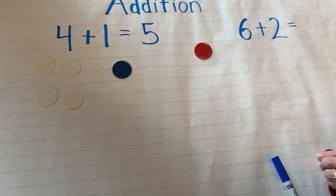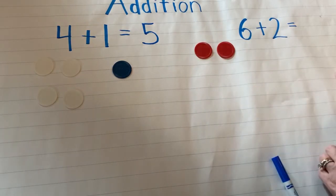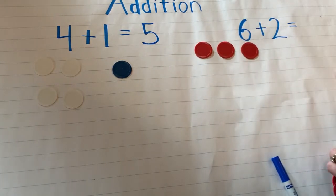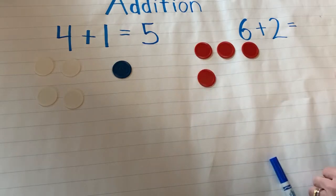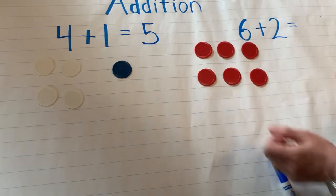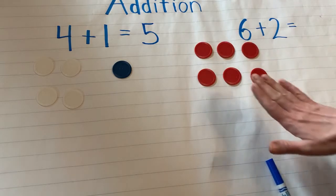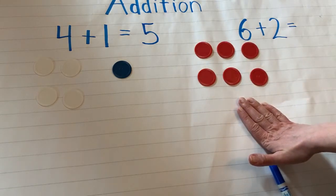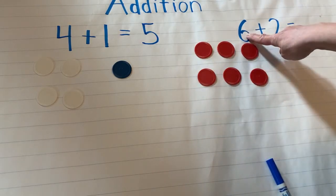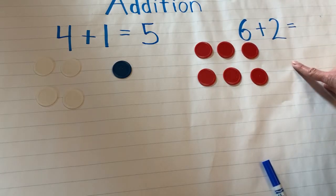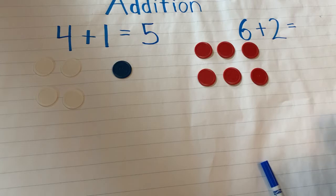One, two, three, four, five, six. Again, these tokens represent or show the first number. Now I need to show my second number. And again, Mrs. DeLuca is using tokens but you can use anything at all. So I need to get how many?